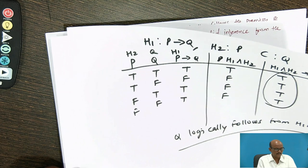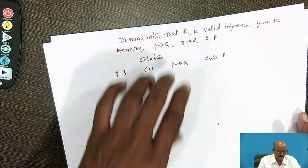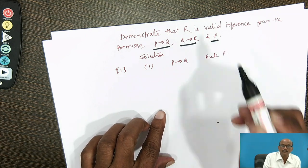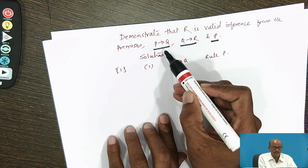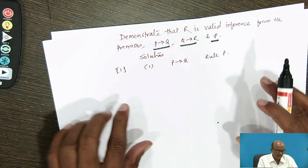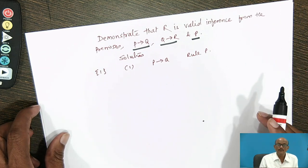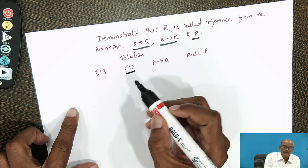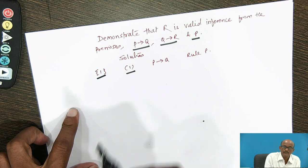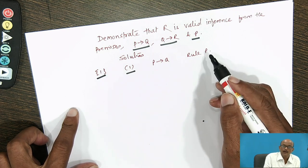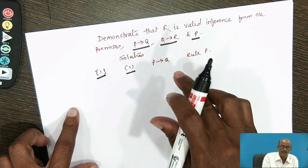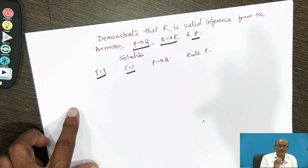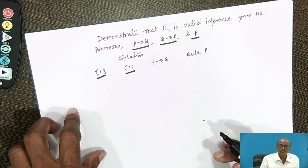Next example: Demonstrate that R is a valid inference from the premises P → Q, Q → R, and P. This can be proved without constructing a truth table, using a derivation. In a derivation, we have step numbers, the premises being used, and two rules: Rule P, which is the introduction of any premise into the derivation, and Rule T, which is writing a conclusion derived from two premises.